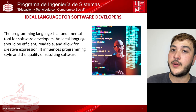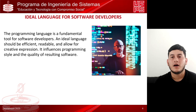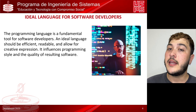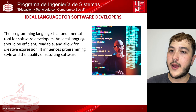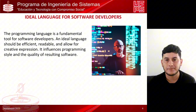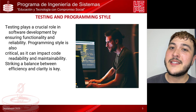Now let's discuss the ideal language for software developers. In this context, it's essential to have a programming language that allows developers to express their ideas effectively. Programming languages play a crucial role in how we write code. It's not just about making programs work correctly — it's also about making them maintainable and understandable by other programmers. A good programming language should also be efficient in terms of computer resource usage. Efficiency is an important aspect of both the science and art of programming.